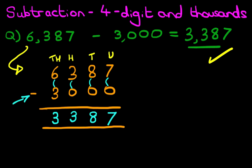So that is how we do subtraction of four digit numbers and thousands using the vertical format. I'll be right back.